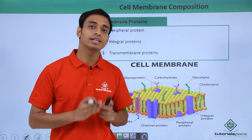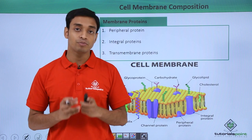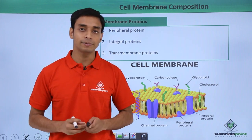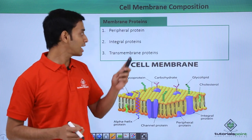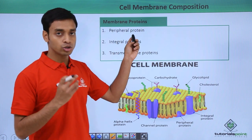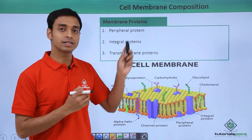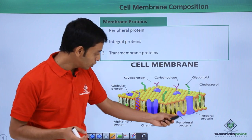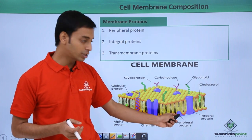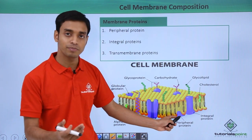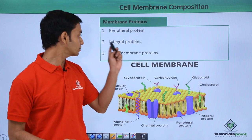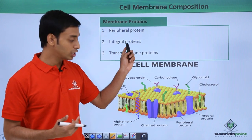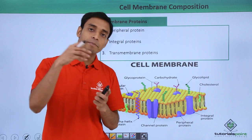The membrane proteins can be of three different types based on their position in the lipid bilayer. The first type is the peripheral protein — from the name we can understand these are present on the outer side of the membrane. You can see an example of a peripheral protein located on the outer layer of the membrane.